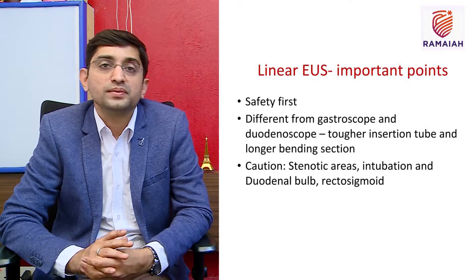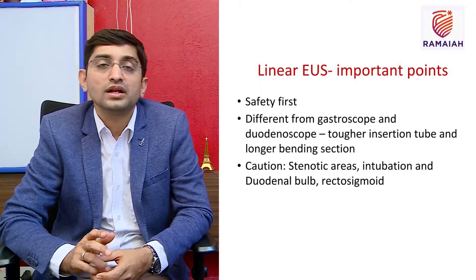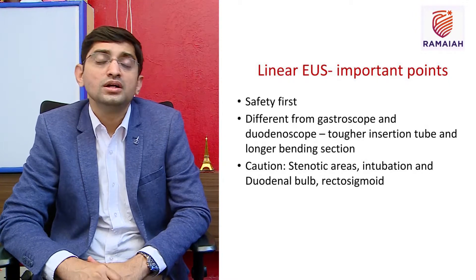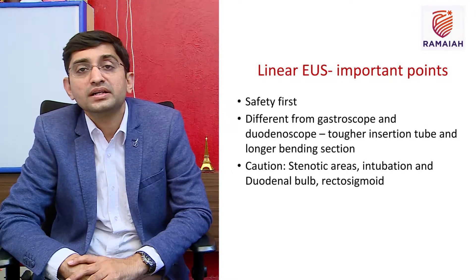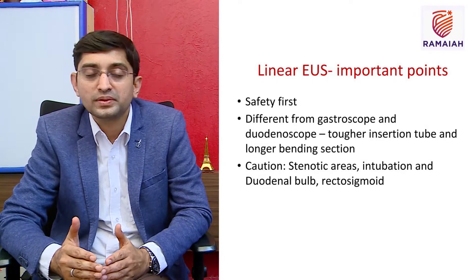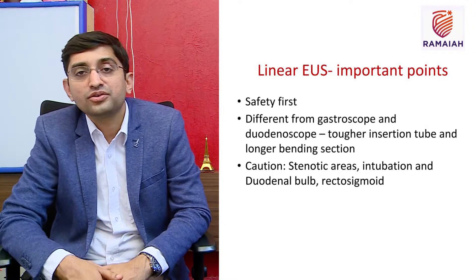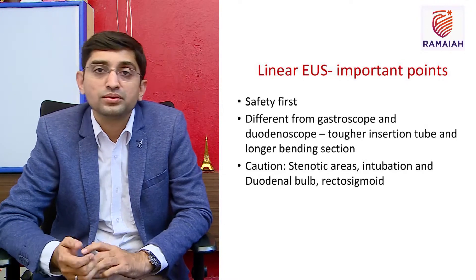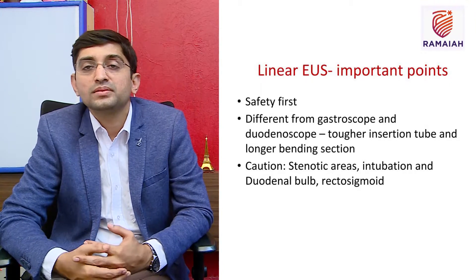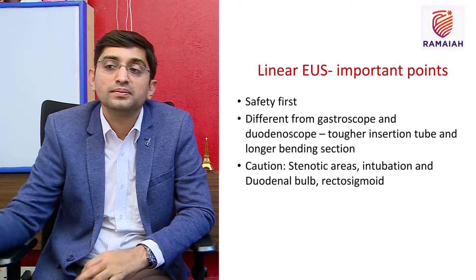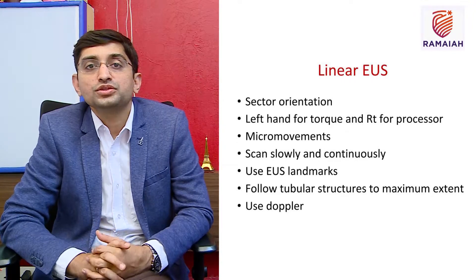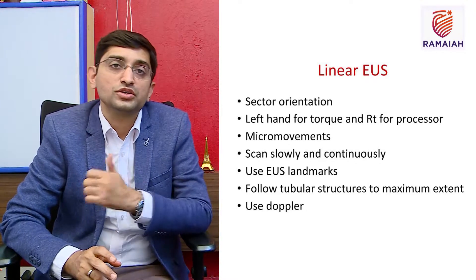Compared to a regular endoscope, the EUS scope has a tougher insertion tube and a longer bending section, which can make introduction more difficult. There is no magic trick — push to the posterior pharyngeal wall, use the big wheel down, and intubate somewhat blindly. Always use caution at stenotic areas, the duodenal bulb, and the rectosigmoid area.